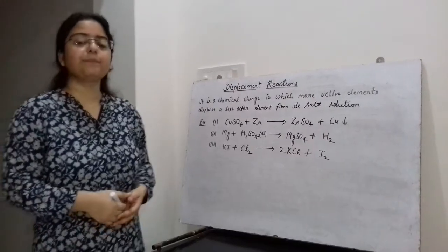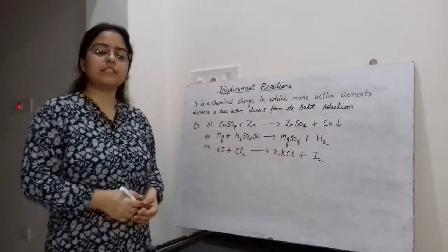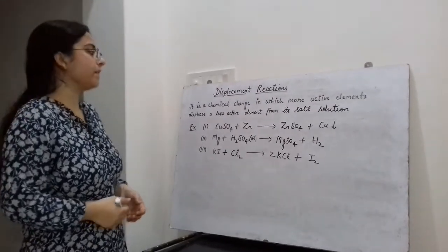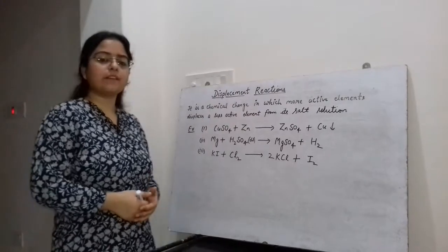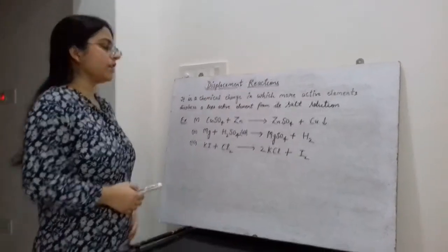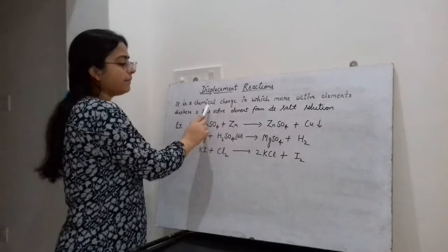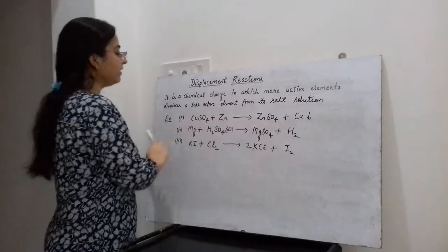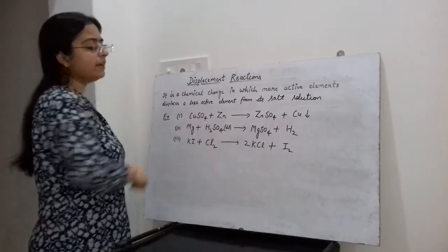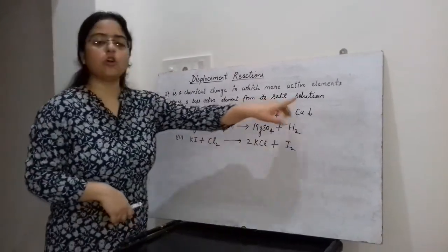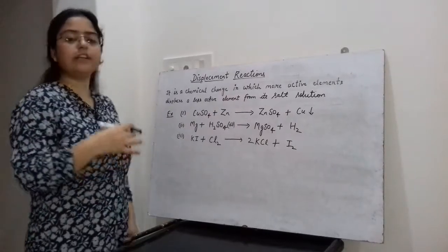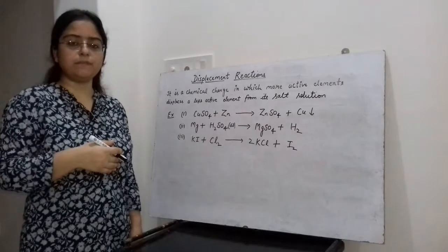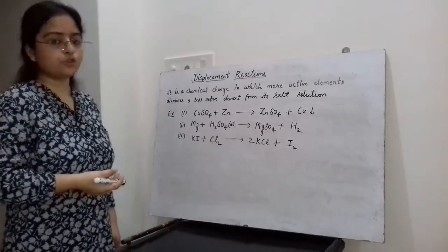Dear students, in the previous video we have discussed about thermal dissociation reaction. Now our next topic is displacement reaction. A displacement reaction is a chemical change in which a more active element displaces a less active element from its salt solution — a reaction in which a more active element displaces a less active element from a compound or from a salt solution.